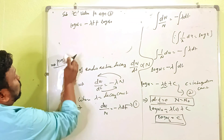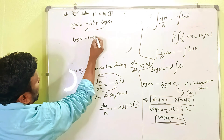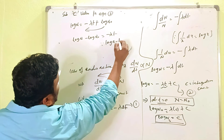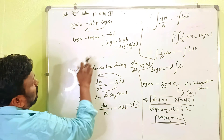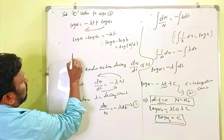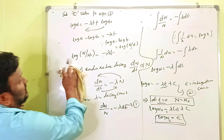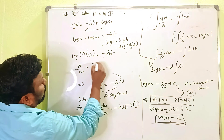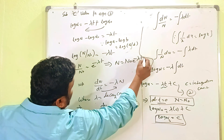Substituting C = log N₀ into equation number two: log N = −λt + log N₀. Bringing log N₀ to the left side: log N − log N₀ = −λt. Using the logarithm rule log(a/b) = log a − log b, we get: log(N/N₀) = −λt. Applying anti-logarithm: N/N₀ = e^(−λt), therefore N = N₀ e^(−λt).